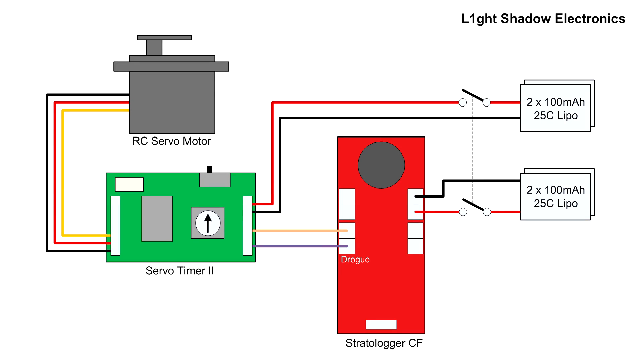One issue we had with the Stratologger was that it constantly does a continuity check on the pyro outputs and this would trigger the timer when it was powered up. Now this is not a problem if you have an electric match connected but the servo timer's optocoupler is sensitive enough to detect the continuity check.